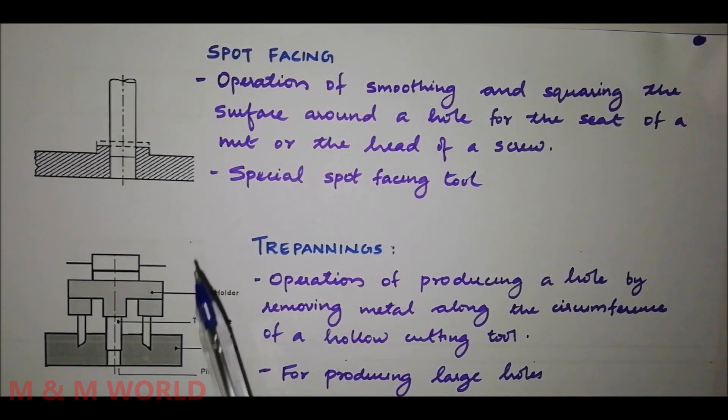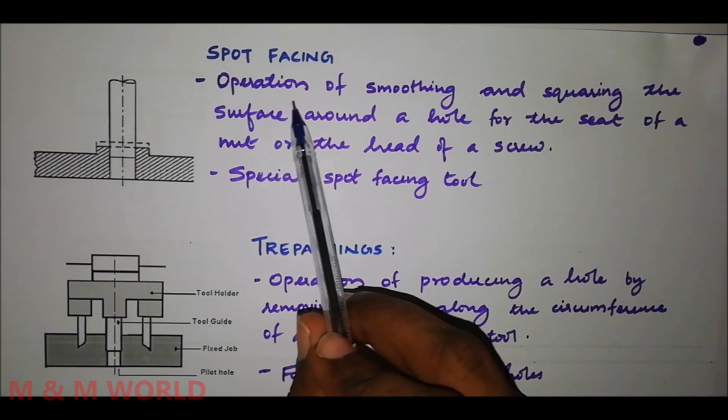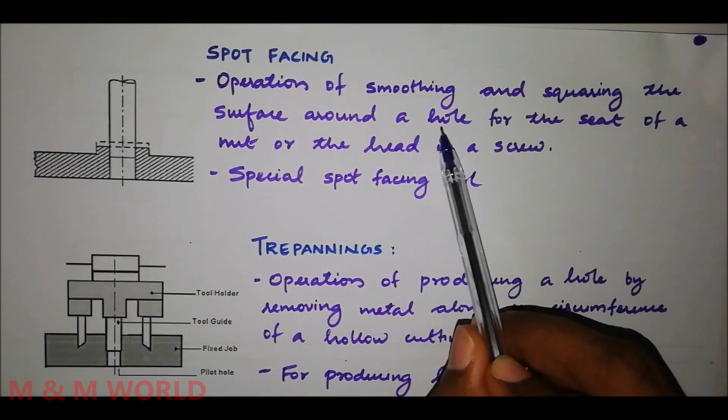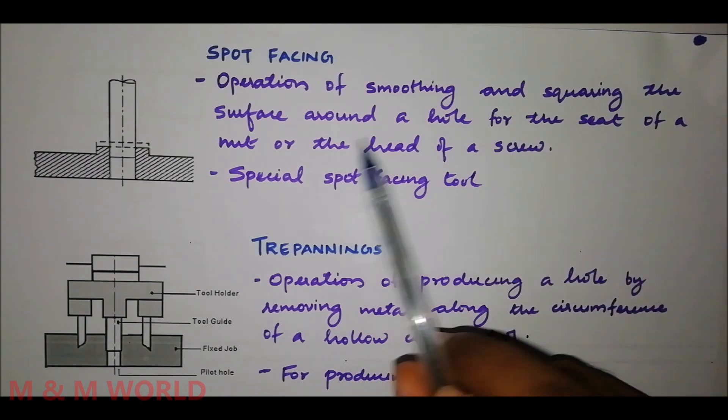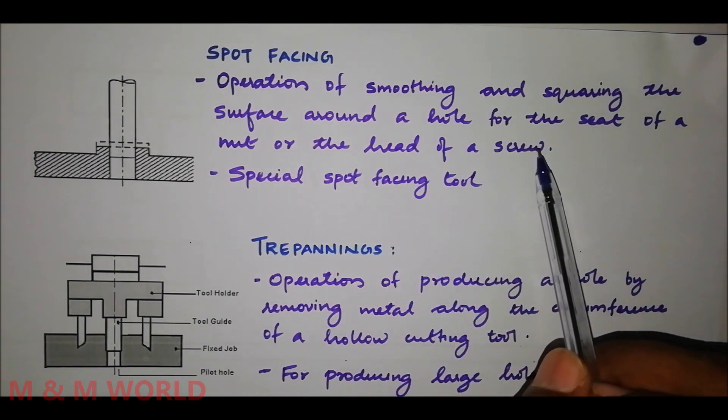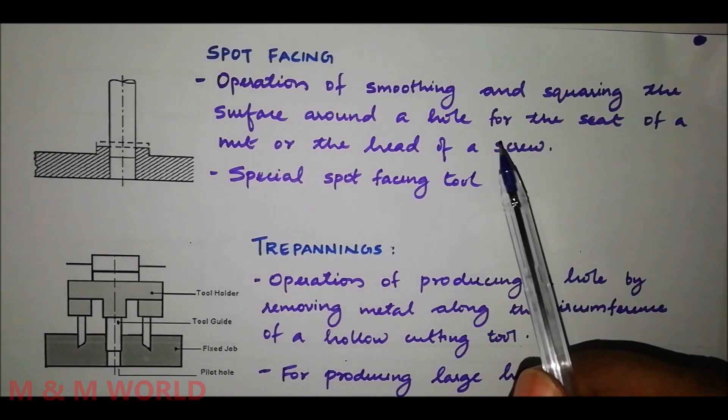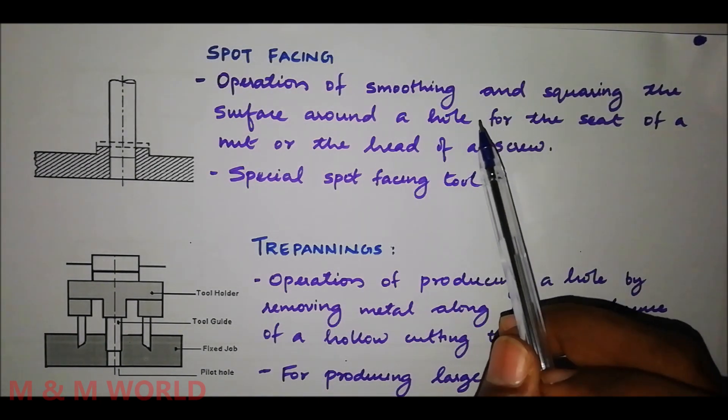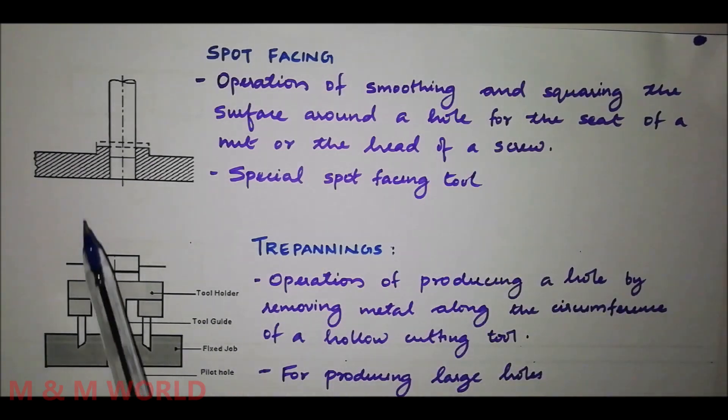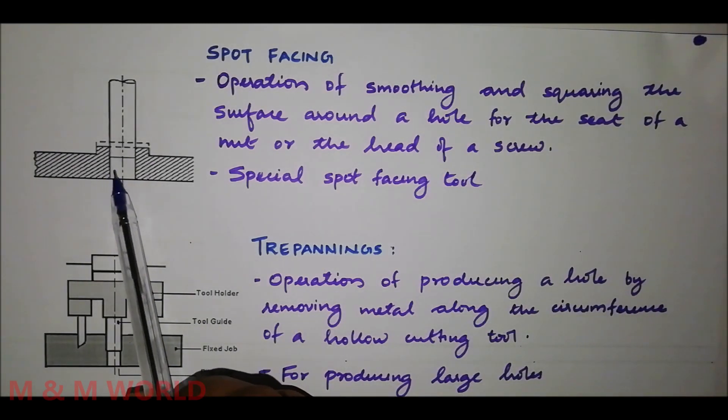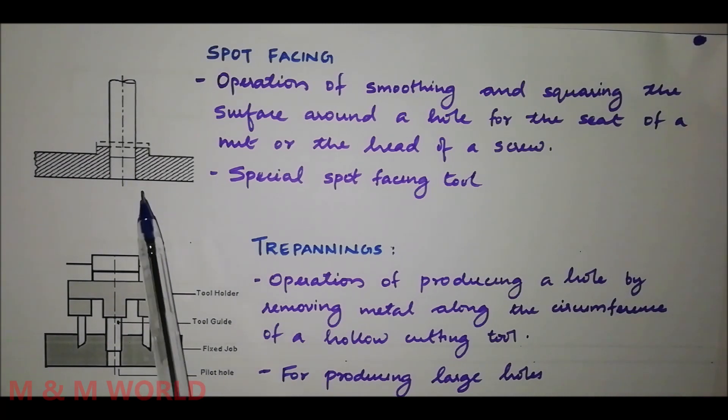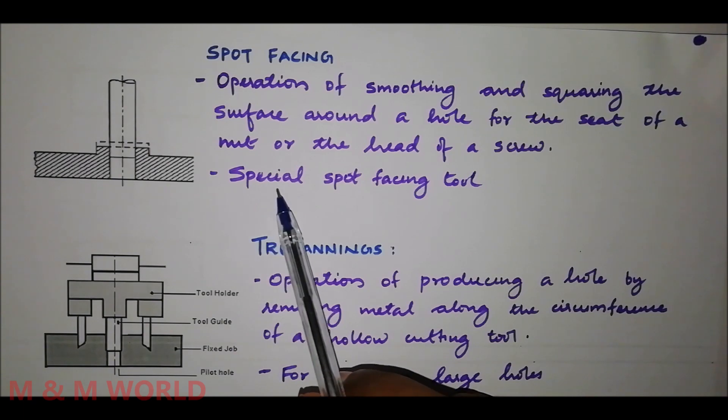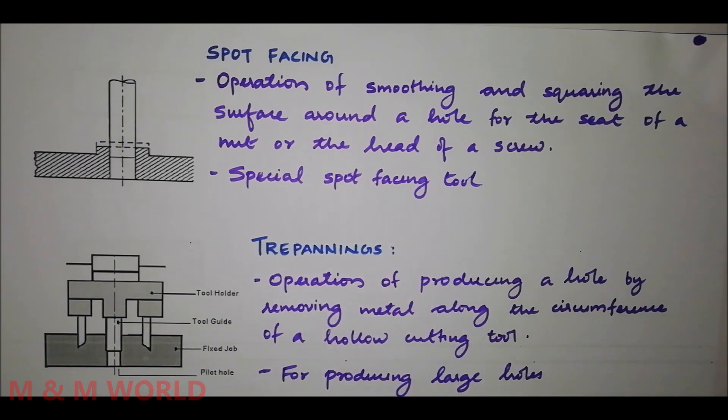The next operation is spot facing. It is the operation of smoothing and squaring the surface around a hole for the seat of a nut or the head of a screw. It is a small height counter bore and its application is to face the area where a bolt or nut has to sit. The tool used is a counter bore or a special spot facing tool.